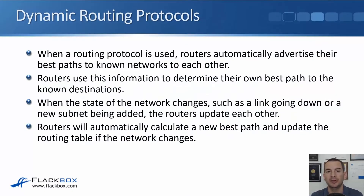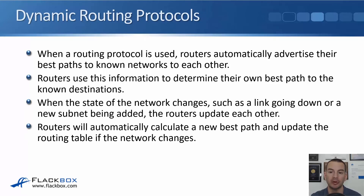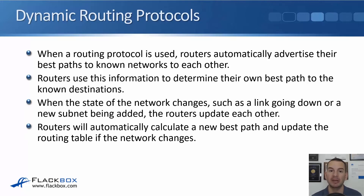In this lecture, you'll learn about the basics of dynamic routing protocols and how they compare to using static routes. When a routing protocol is used, routers will automatically advertise their best paths to known networks to each other. Routers will then use this information to determine their own best path to those known destinations. And if the state of the network changes, like if a link goes up or down, or if a new network is added to the topology, then the routers will automatically update each other with that information. Routers can use that information to automatically calculate a new best path and update their routing table in accordance with those network changes.